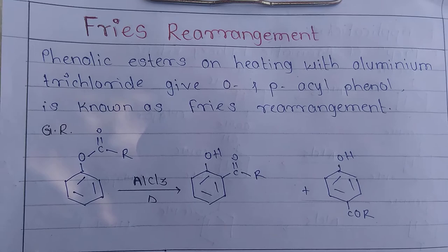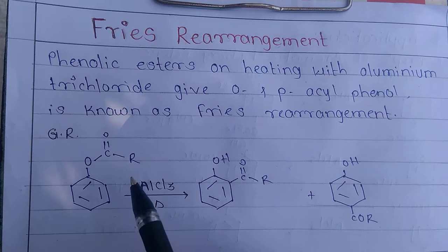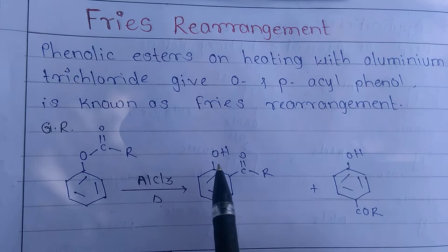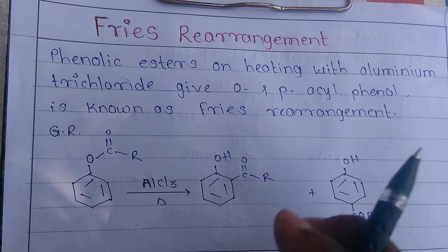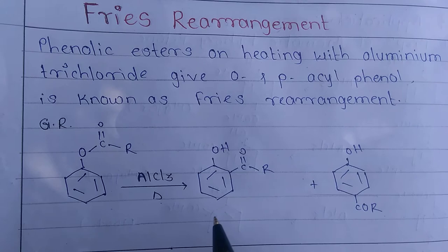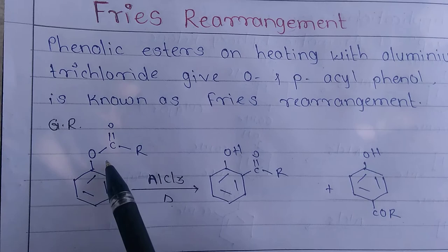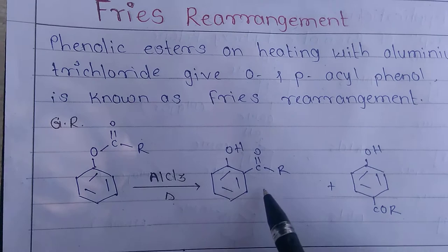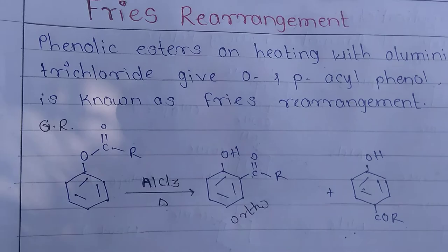Today we are discussing the Fries rearrangement. Phenolic esters on heating with aluminium trichloride, a Lewis acid, give ortho and para-acylphenols — this is known as the Fries rearrangement. A mixture of ortho and para isomers is obtained from this rearrangement. If an electron-withdrawing group is present in the substrate, the reaction retardation takes place, as in the case of the Friedel-Crafts reaction. Here the phenolic ester is heated with AlCl3, giving the ortho and para-acylphenol products.